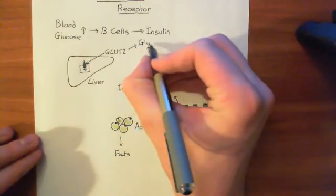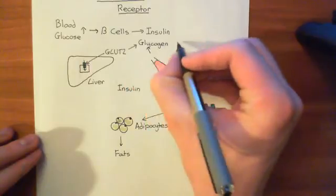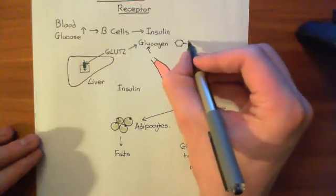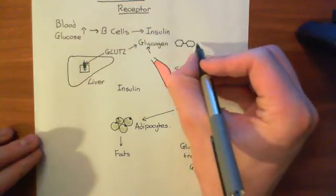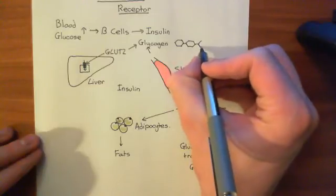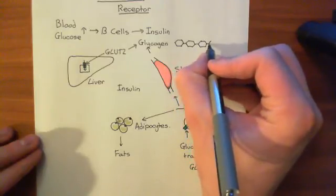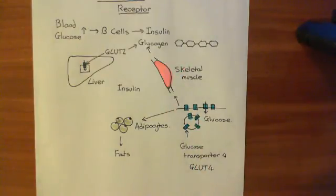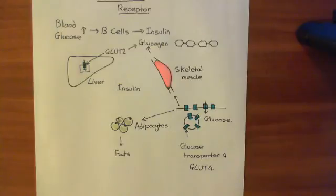Glycogen is glucose bound to glucose bound to glucose — a large polymer of glucose units joined together. Glycogen will be stored within the hepatocytes and the skeletal muscle cells so that it can be later broken down. It's stored in the skeletal muscle cells so that the glucose can later be used by the skeletal muscle cell when you next exercise.